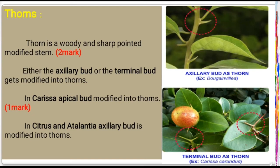In some plants, axillary buds are modified into thorns. In other plants, terminal buds are modified into thorns. So thorn is a modification of either axillary or terminal buds. The first example is Karisal, where terminal buds are modified into thorns. The second example shows apical buds modified into thorns.